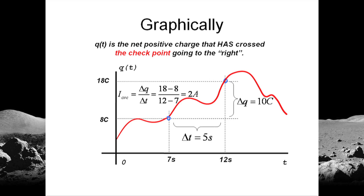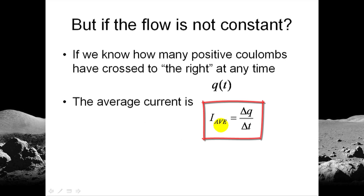The average current at that checkpoint is 2 amperes. That value happens to be the slope of the line that joins those two points. And that is the average current. It is delta q divided by delta t, the average current in the time window, delta t.